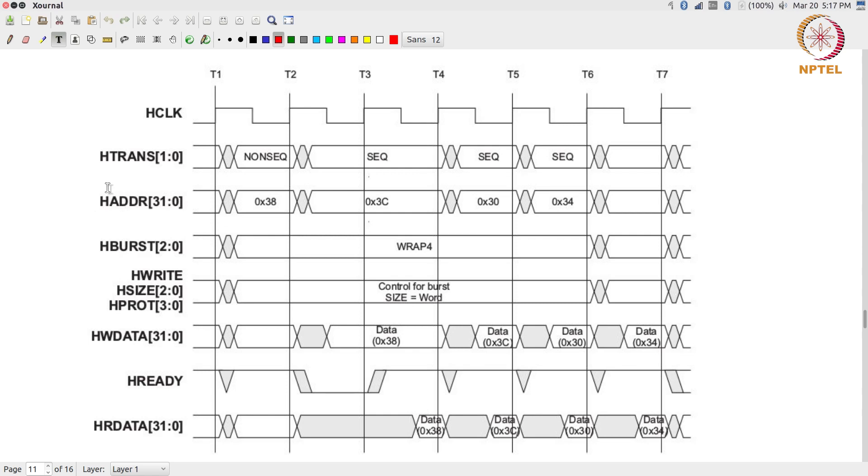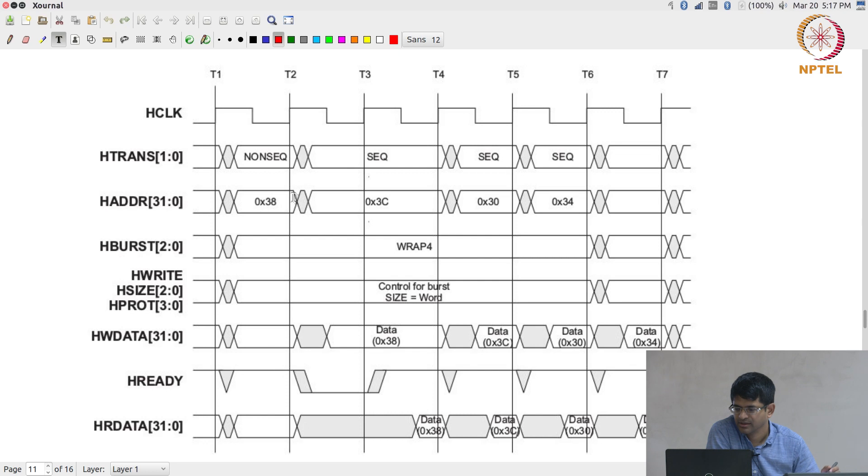The burst transaction essentially has one extra signal over here called h_trans which is basically saying the transfer type. What you can see over here is the h_address again is put out by the master. There is something which indicates the burst type, and there is also the h_write and some other control signals. H_data, h_w_data, h_ready and h_r_data are pretty much the same as what we were discussing earlier. The thing to keep in mind over here is now let us take a slightly closer look at the addresses that we have.